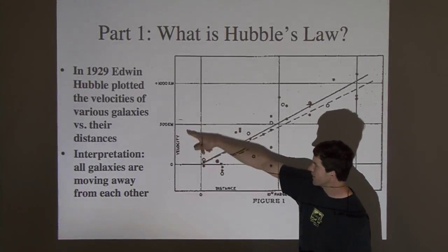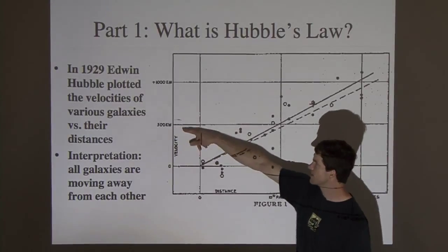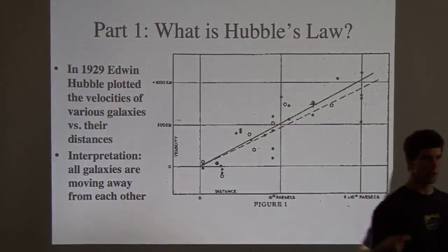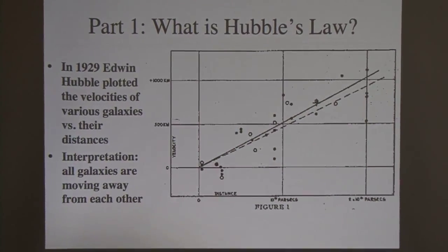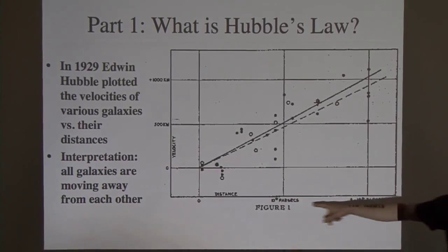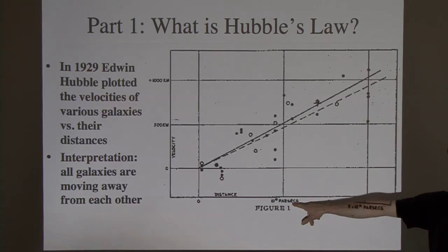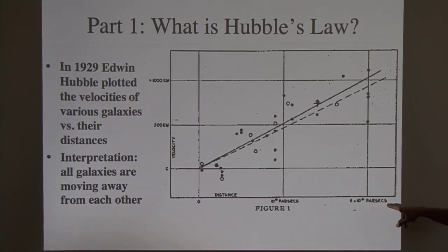And he's got velocity over on this axis, on the y-axis, and those units, that's 500 kilometers per second and 1,000 kilometers per second. So he was looking at velocities of galaxies as they moved away from us as a function of distance. And so down on the x-axis, it's hard to read the numbers, but that's 10 to the sixth parsecs, and 2 times 10 to the sixth parsecs.